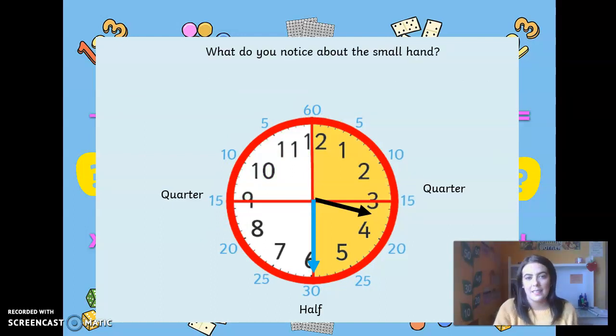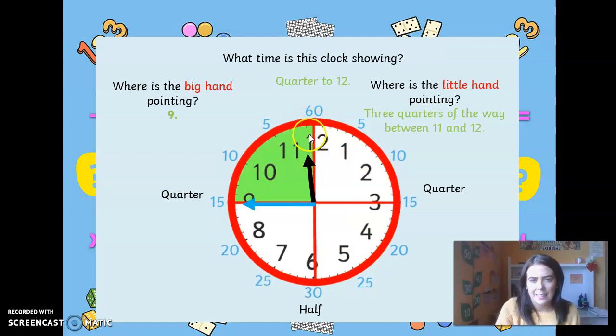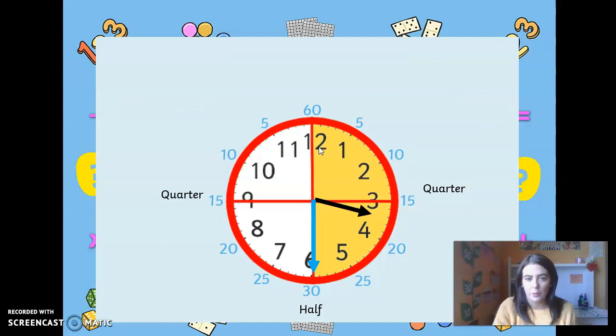Now what time is this? What do you notice about the small hand? If you can see when we go back a little bit, you can see that it is nearly to the next hour. So the small hand is closer to that hour.